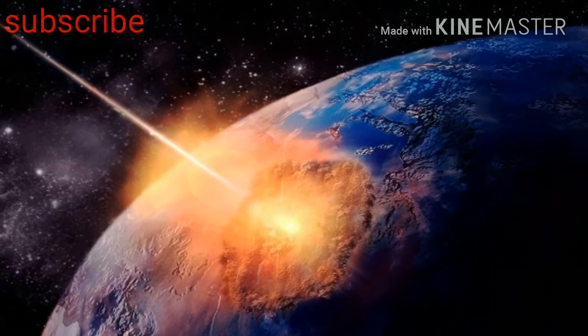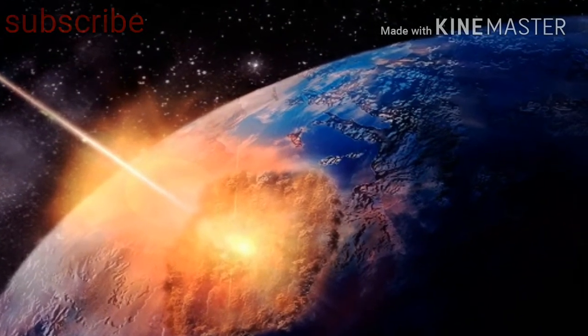Asteroids are made up of metals and rocky material, while comets are made up of ice dust and rocky material.